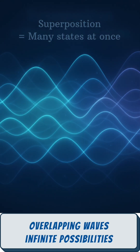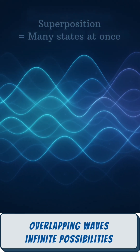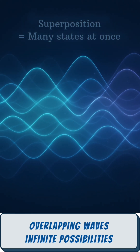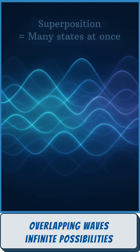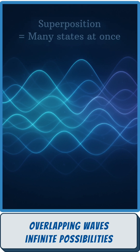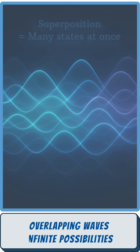Here is the cool part: waves can add up or cancel out. We call this superposition. It means a particle can be in many states at once, like overlapping ripples creating a unique pattern.